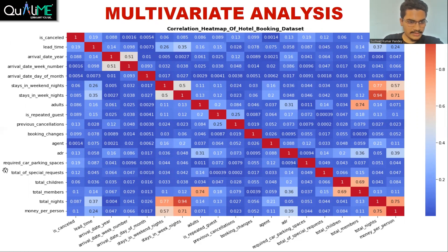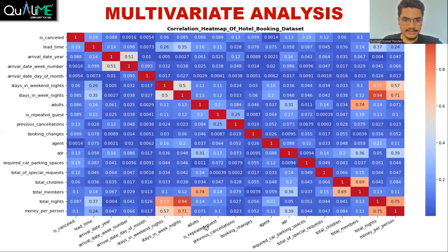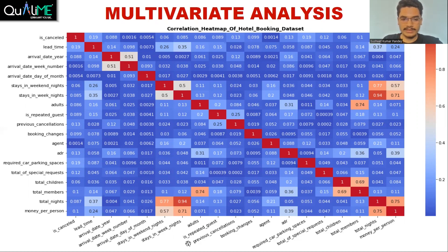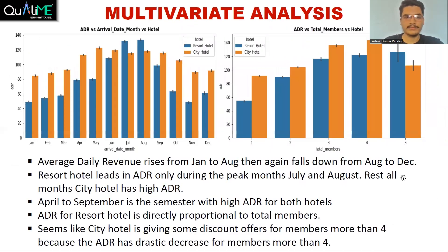If we were to predict total special requests, the feature is fairly correlated with is-cancelled and average daily revenue. The vice versa is more accurate: if total special requests increase, average daily revenue increases rather than the other way around. It is also related with total members arriving, which is obvious. Some high correlations exist between features because we created new features based on existing ones without dropping the originals.